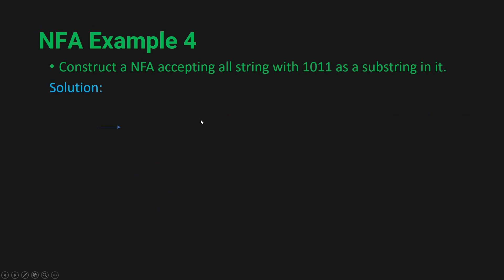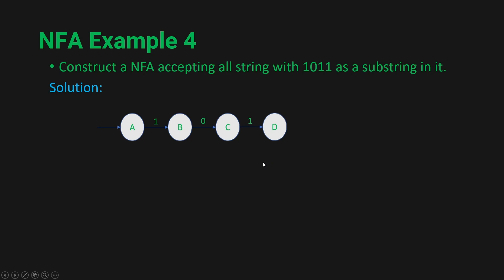The solution starts with starting state A. We get input 1 and go to state B. We get input 0 and go to state C. We get input 1 and go to state D. In state D, if we get input 1, we go to state E and make it our final state. So anything can be in the beginning and anything in the end is fine, as long as 1,0,1,1 is a substring of the entire string. In the beginning we can accept 0 and 1, and at the end also we can accept 0 or 1.